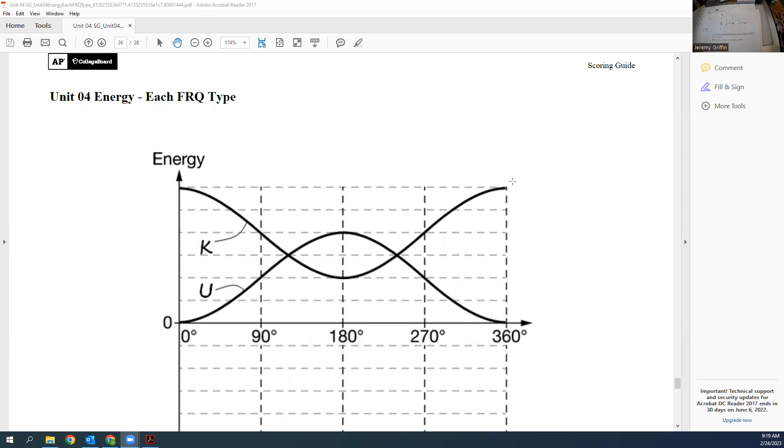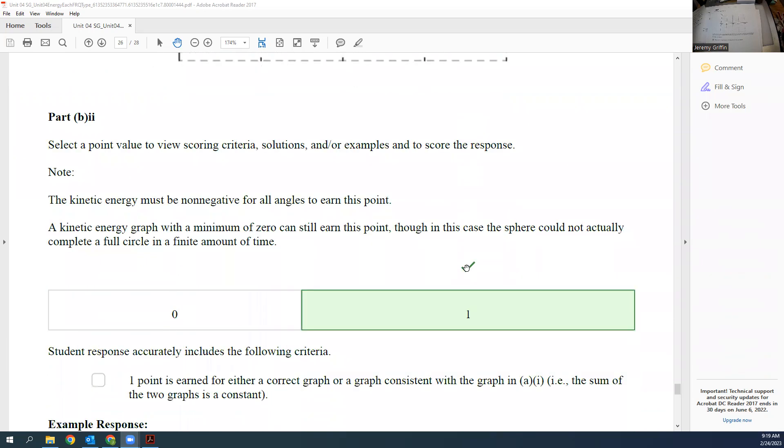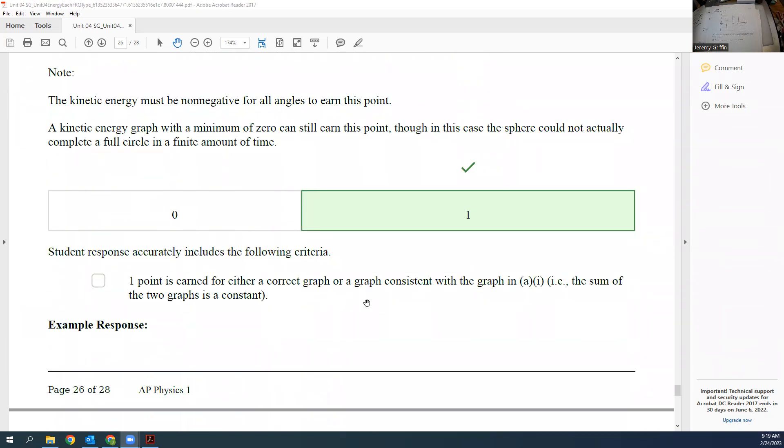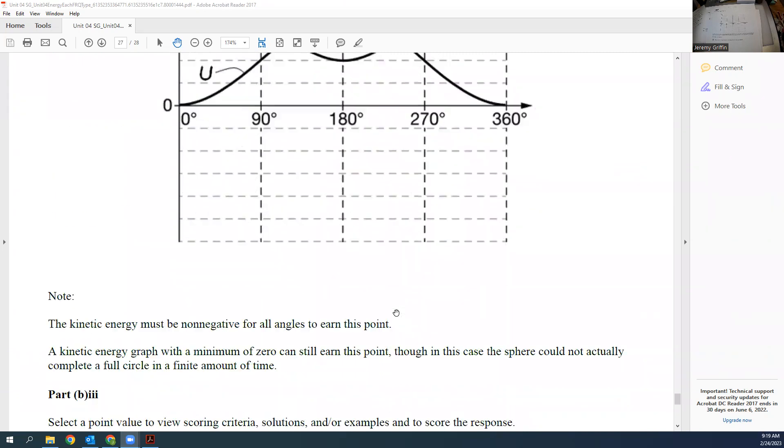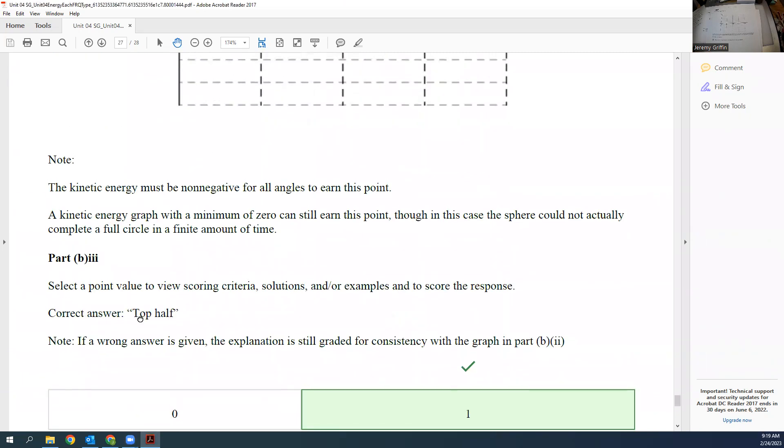When the sphere makes a complete revolution, does it spend more time in the top half or the bottom half of the circle? You guys tell me real fast. Top half or bottom half? Where does it spend more time? The top, because it's going slower around the top. Around the bottom it's whizzing real fast, so it's got to spend more time on the top. Correct answer, top half.